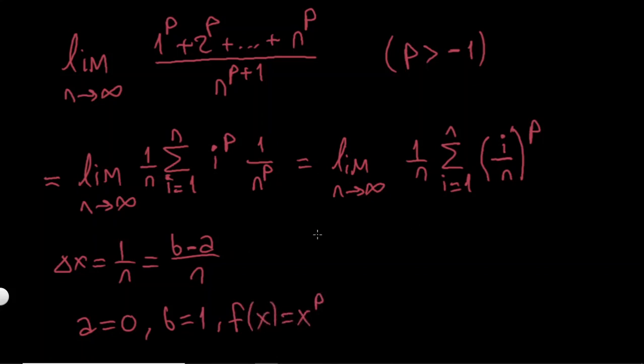My integral is gonna look like the integral from A to B, from 0 to 1. From 0 to 1, it's gonna be F(X) dX, but let's just write it as X to the P dX.